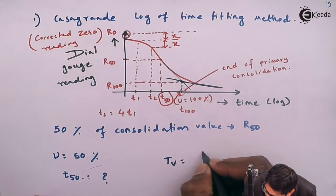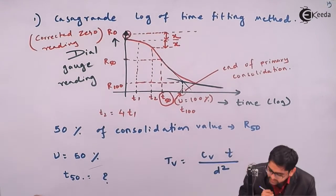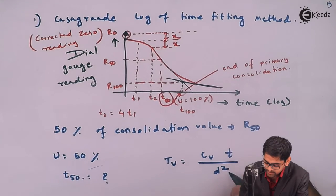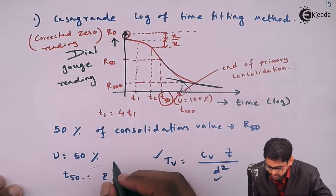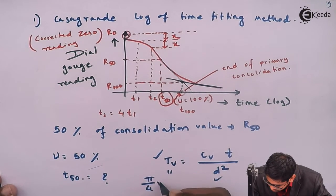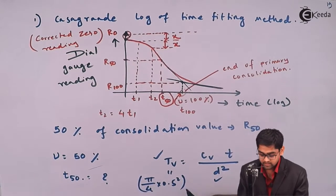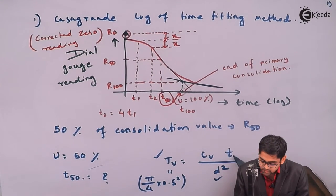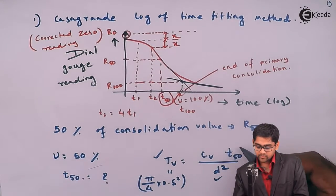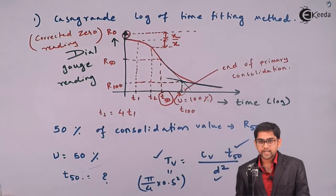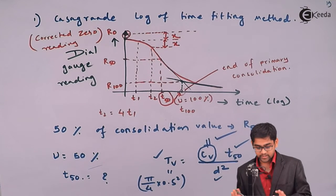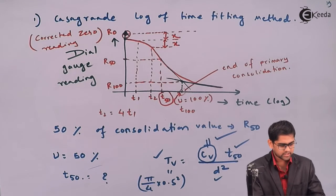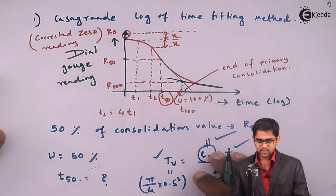The equation is: Tv = cv·t / d². Here d is known, and Tv at U = 50% equals (π/4)×(0.5)² — you do the arithmetic to get Tv. You know t50 from the graph (time for 50% consolidation in the lab) and you know the thickness d, so you can calculate the coefficient of consolidation cv. This completes the first procedure: the Casagrande log of time fitting method.